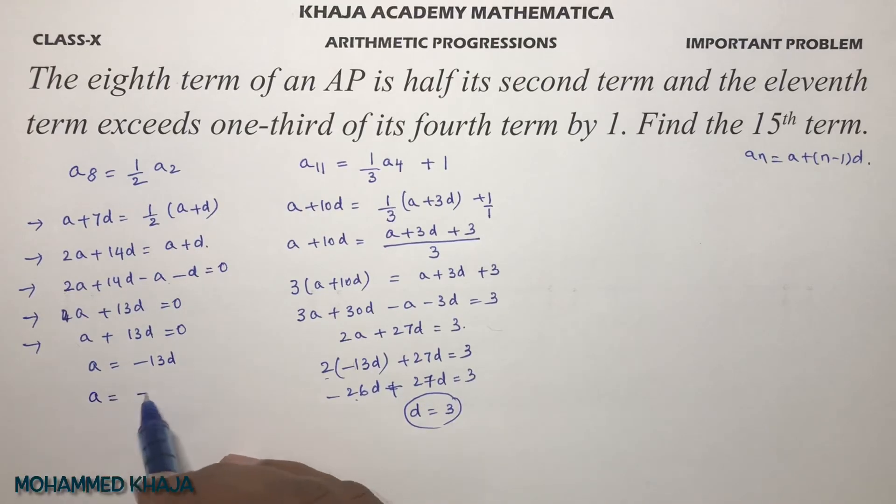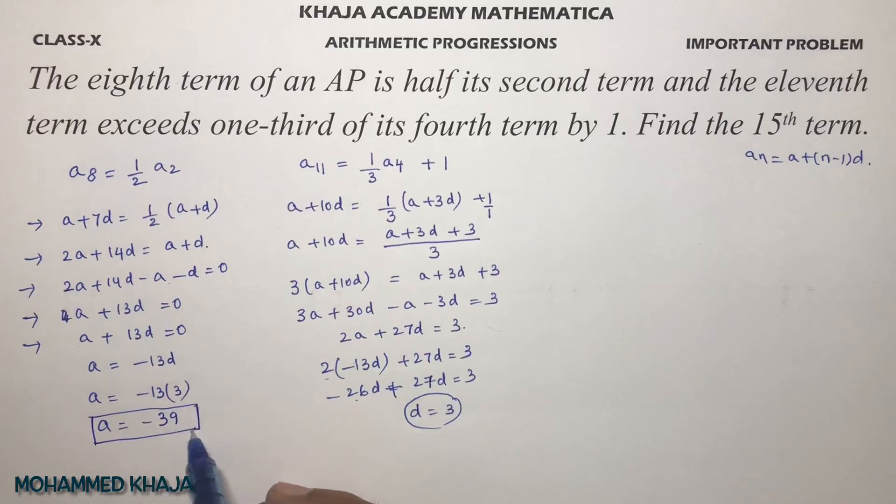Substitute here: a equals minus 13 times 3, so the value of a is minus 39. Now we have the values of a and d.